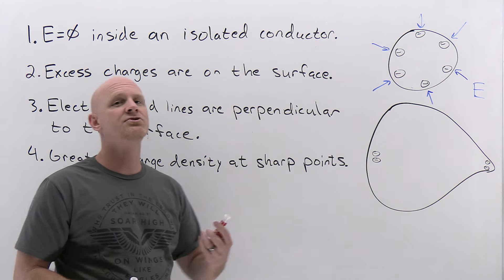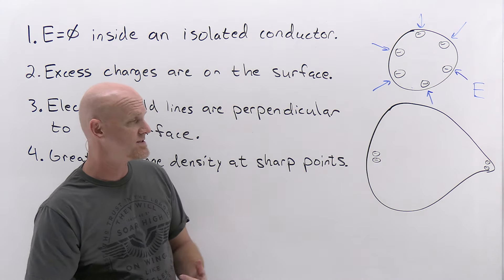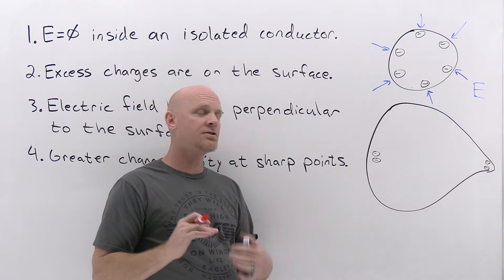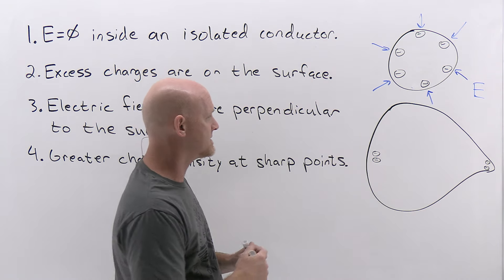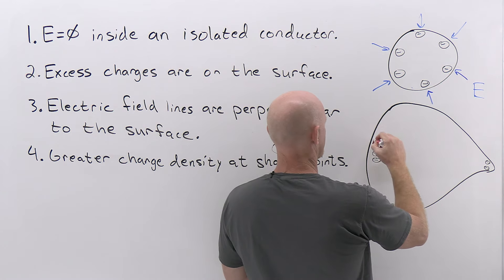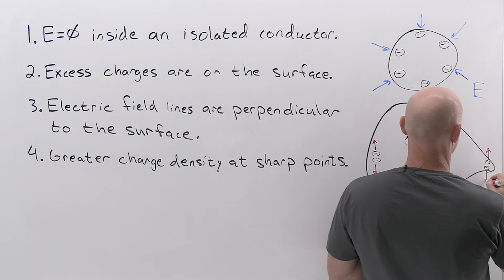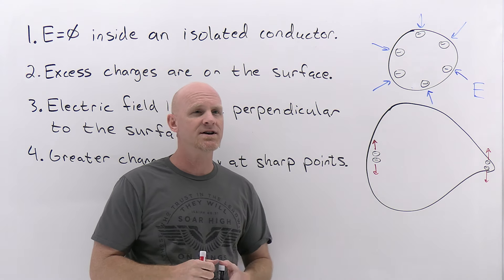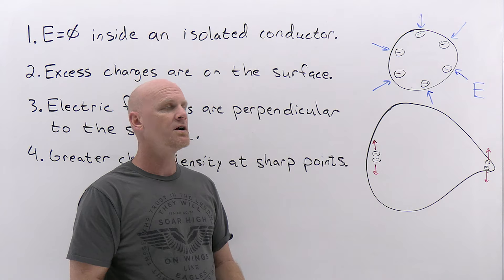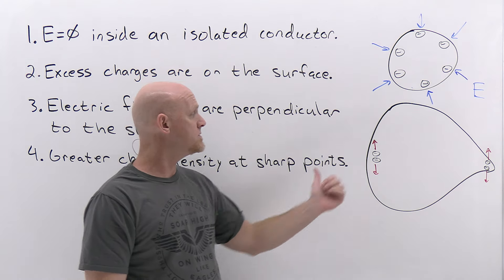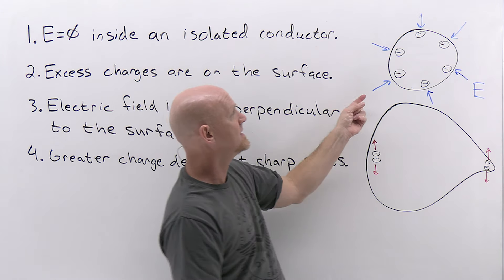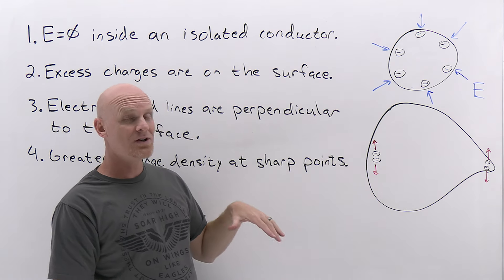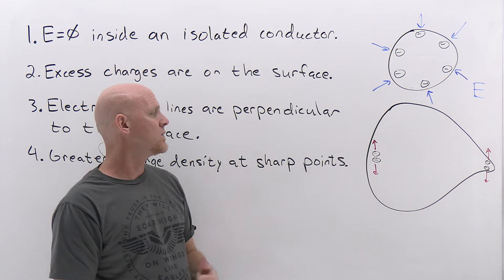Instead of drawing the electric field, I'm going to draw the direction of the Coulombic repulsion between these negative charges. In both cases they want to move farther apart. Keep in mind, when this thing reaches electrostatic equilibrium, all charges are going to be near the surface and will want to move in a direction perpendicular to the surface. If the electric field points perpendicular in towards the surface, the electrons want to move directly outward perpendicularly from the surface.